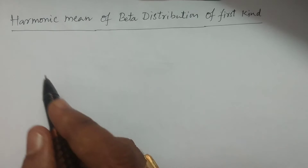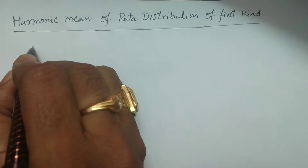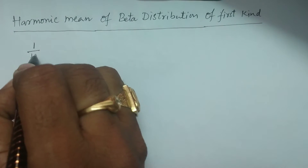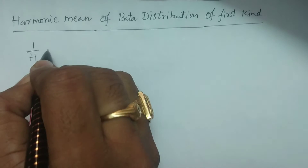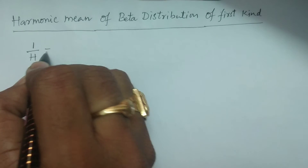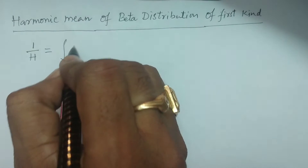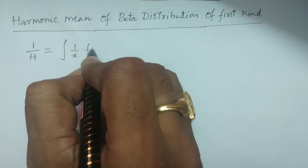The harmonic mean is calculated by 1 by h, where harmonic mean is h. So it is equivalent to the integral of 1 by x times f of x dx.